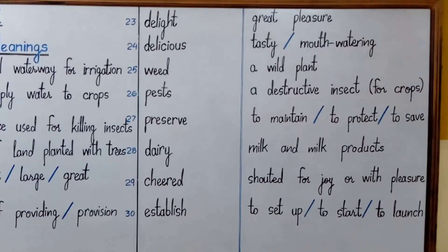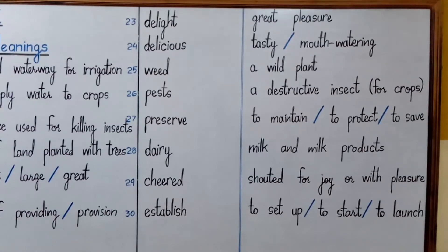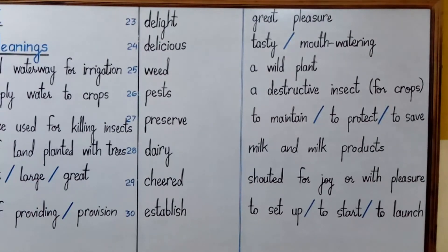Number twenty-four is 'delicious'. It means tasty or mouth-watering. Something which is delicious — your mouth is filled with water just by having a glance at that thing.